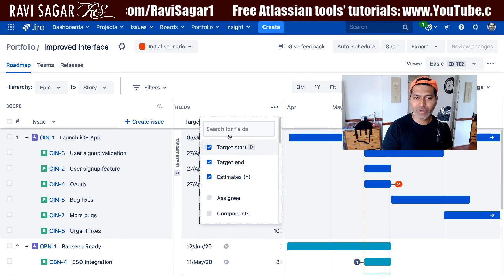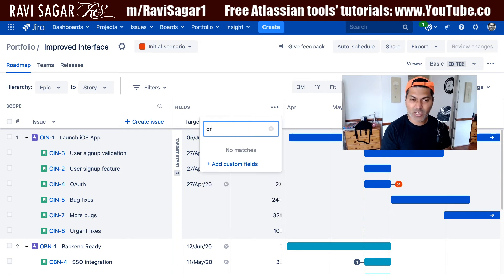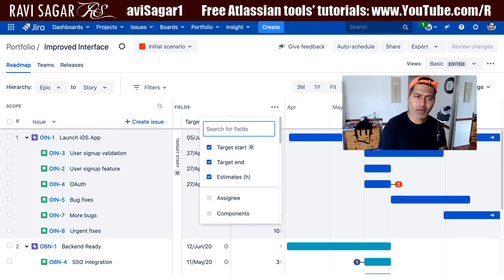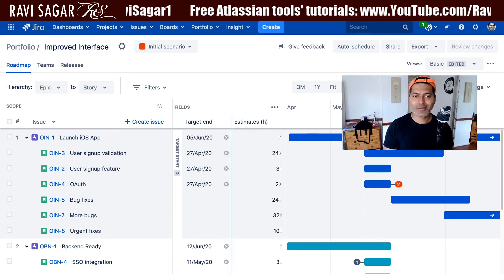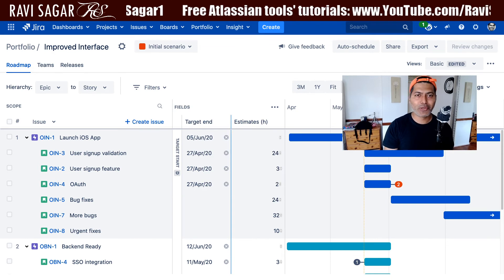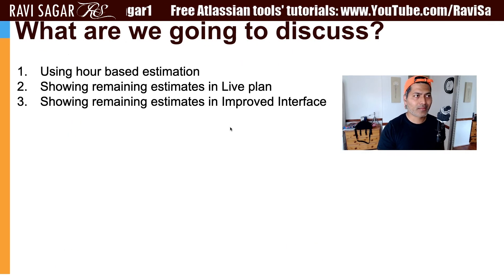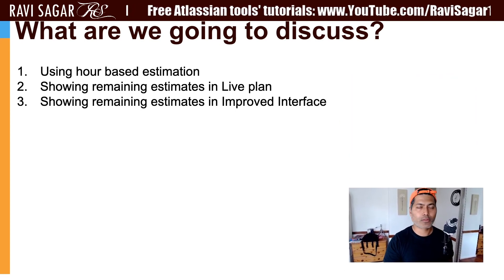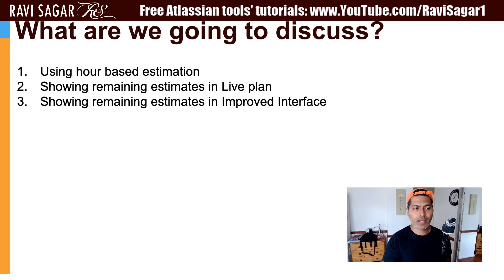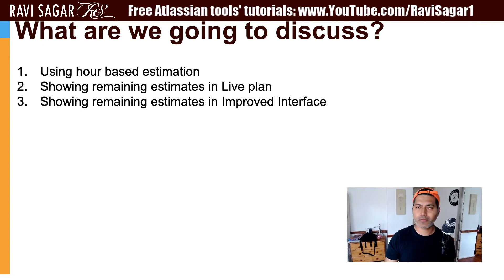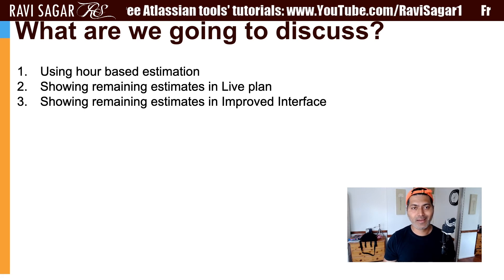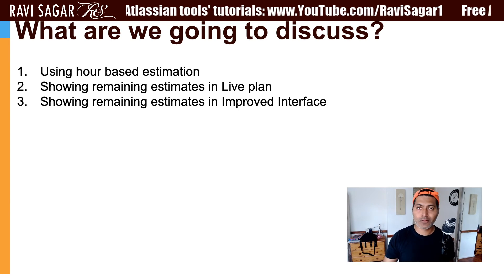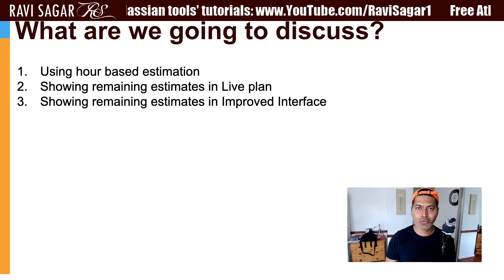I was trying to add a new field here — something like original estimate or just estimate — but we just have one field in the improved interface. This is something you should be aware of if you're using the improved interface, because when it comes to using Portfolio, people get confused. Things work differently in the live plan compared to the improved interface. The improved interface has many great features, like dragging and making changes on your plan when working on issues on the timeline.